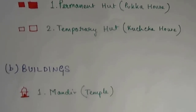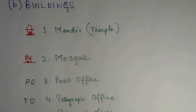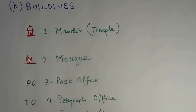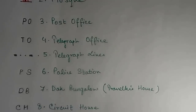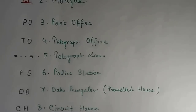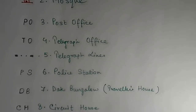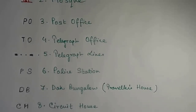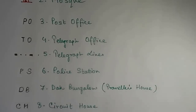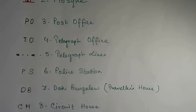Now we move on to buildings. First we have mandir, a temple. Second, we have mosque. Third, we have post office. Then we have TO, that means telegraph office, with telegraph lines shown. PS means police station. Number seven is dark bungalow, basically a guest house or traveler's house where travelers usually stay. Number eight is circuit house — a large building to accommodate officers on duty, so basically any officer of that region stays there.